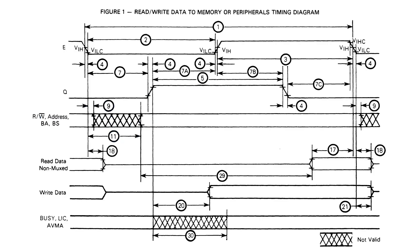The 6809 has a two-phase clock whose signals are called E and Q. If you're familiar with the 6502, E is analogous to the Phi-2 clock. Q, on the other hand, is not analogous to the 6502's Phi-1 clock, which is simply the inverse of Phi-2. Q is a quadrature clock, which is to say that its phase is offset by 90 degrees, or one-quarter of a cycle, and in fact it leads the E clock by that amount.